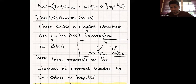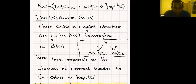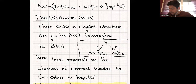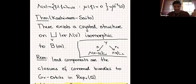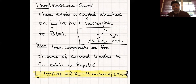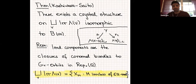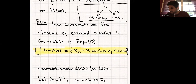The irreducible components are indexed by isoclasses. For Lusztig's quiver variety, you take the union over all dimension vectors V, varying over all dimensions. This does not work directly for B(λ) because in Lusztig's setting you have too many irreducible components — you need to pass to a different set, which leads to Nakajima's quiver variety.